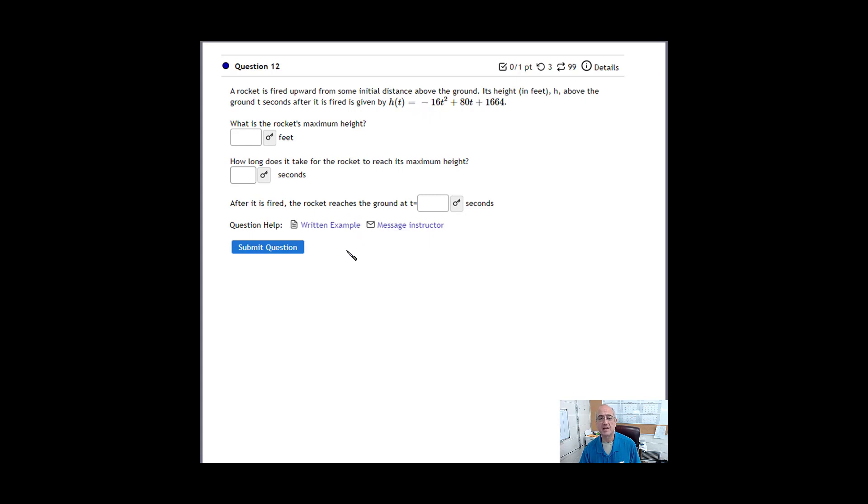So if we can get a sketch of this, it's going to help us out. What's the y-intercept? The y-intercept is where t equals zero. So if we plug in h of zero, notice we get 1664. Okay, so that's our y-intercept. Let's get a little sketch here going, just so we can have something to look at.